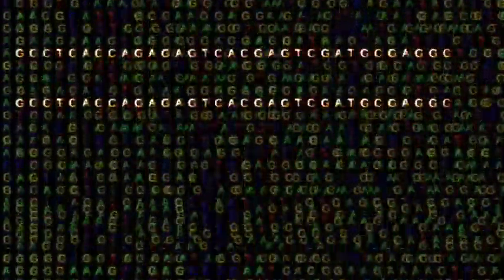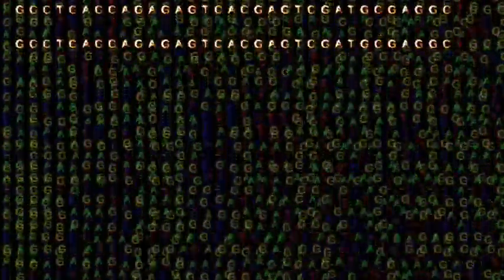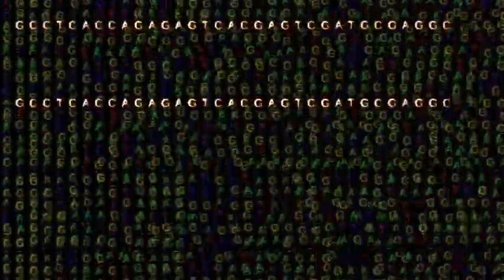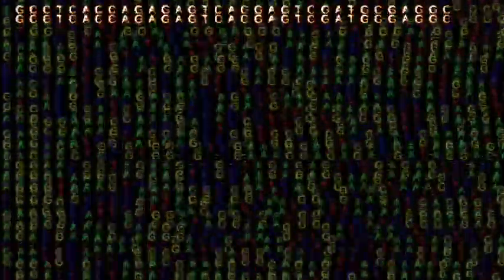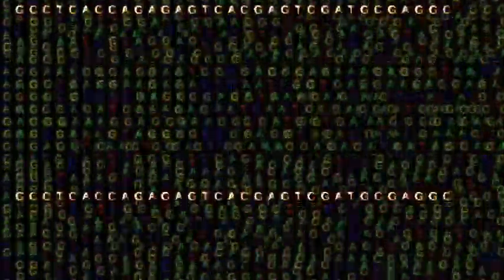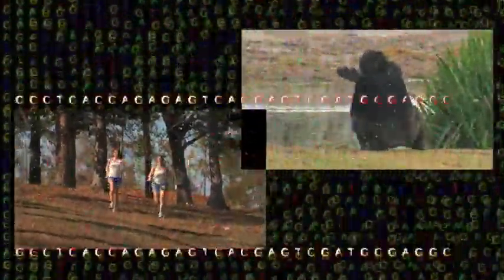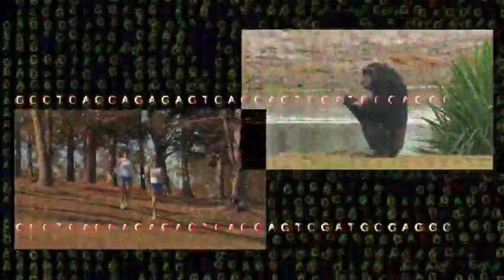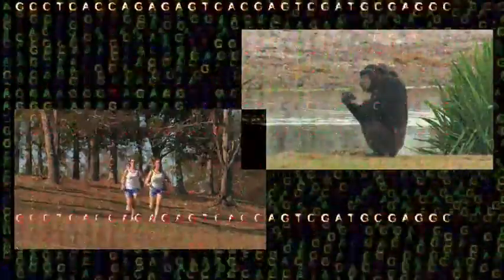In human DNA, there are about 30,000 endogenous retroviruses. There are at least seven distinct instances of identical retro-gene insertions shared between chimps and humans.